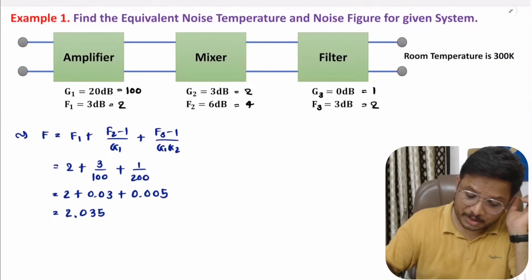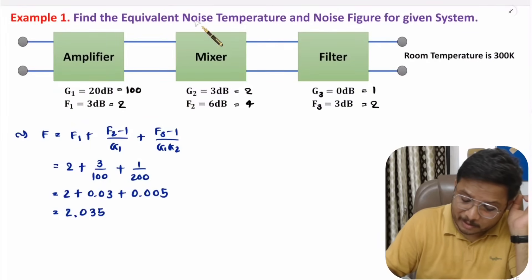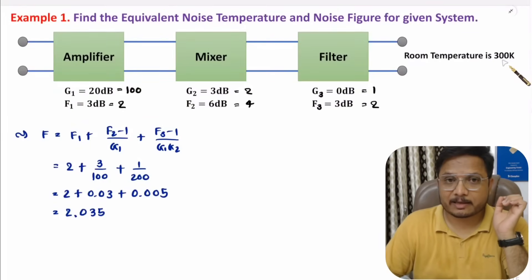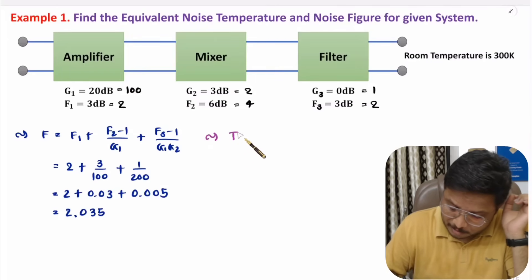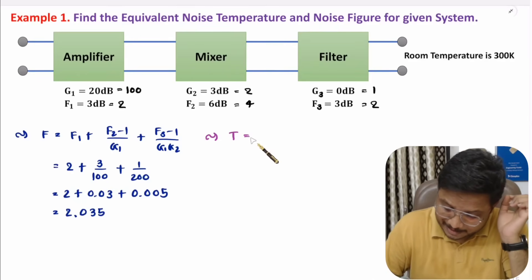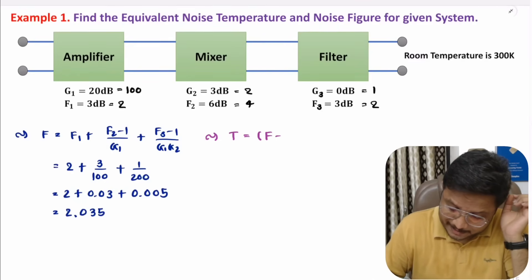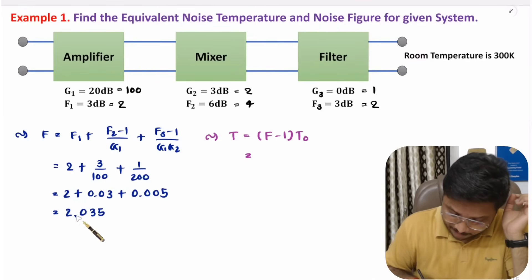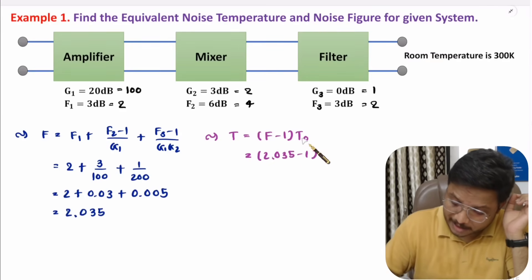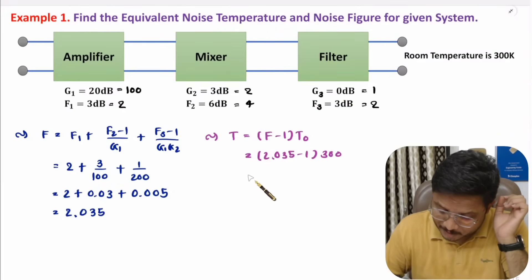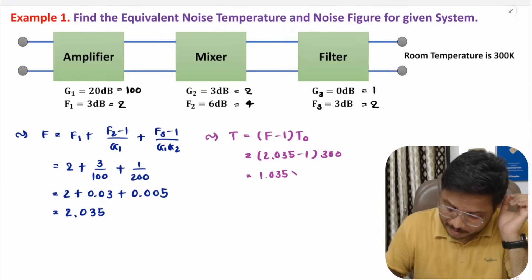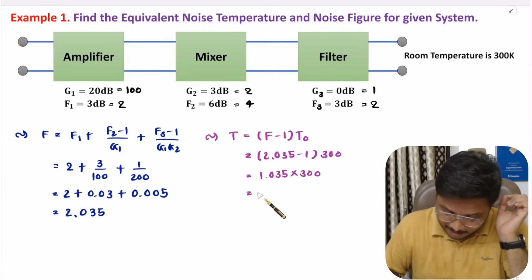Now for the equivalent noise temperature, using T equals (F minus 1) times T-naught. F is 2.035, so F minus 1 equals 1.035. Room temperature T-naught is given as 300 Kelvin. So the equivalent noise temperature is 1.035 times 300, which equals 310.5 Kelvin. That is how you calculate equivalent noise temperature and equivalent noise figure for a cascaded system.